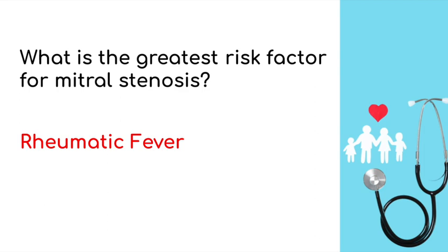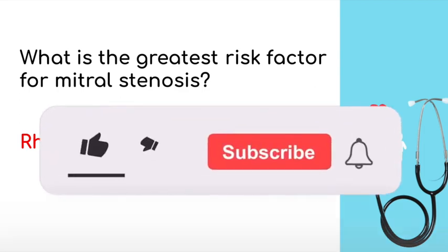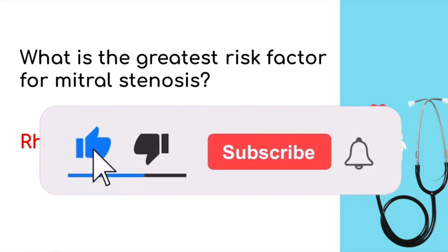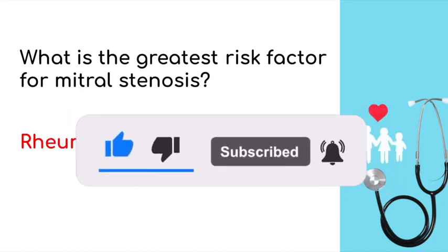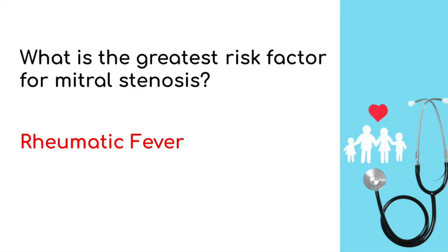Bonus question: what is the most common arrhythmia in patients with mitral stenosis? Atrial fibrillation. On exam day, you'll either hear the murmur or the clinical vignette will describe it as an opening snap with a diastolic rumble heard best at the 4th intercostal space in the mid-clavicular line — that is mitral stenosis.